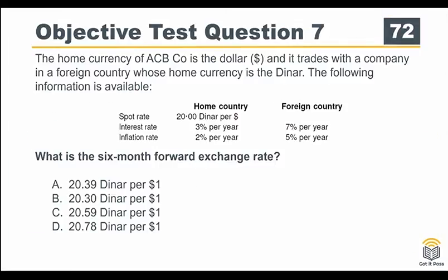Question 7: the information provided is that the home currency of the ACB company is the dollar, and it trades with a company in a foreign country whose home currency is the denner. The spot rate is 20 denners per dollar, and you are also provided with interest rate and inflation rate. The question asks about the forward exchange rate in 6 months' time.